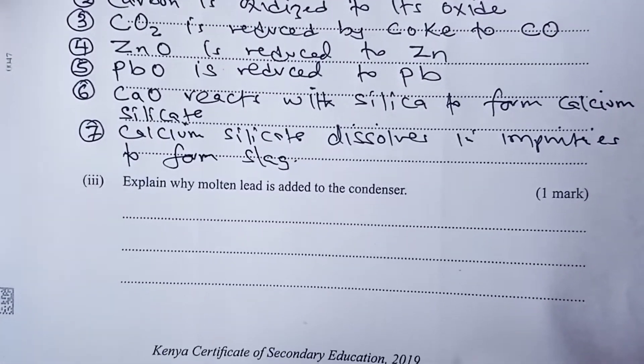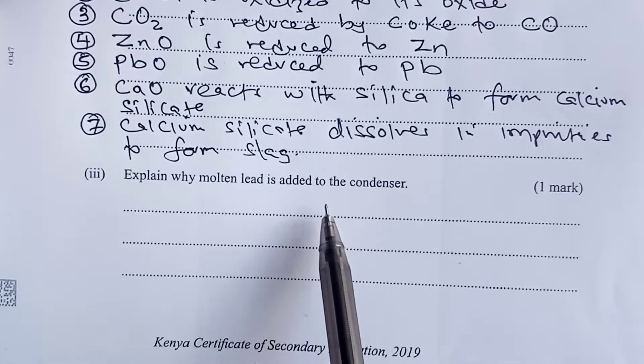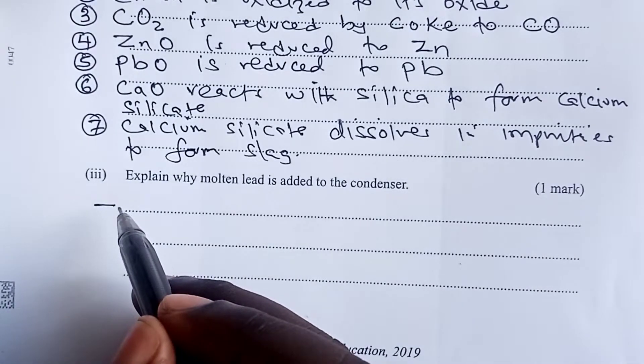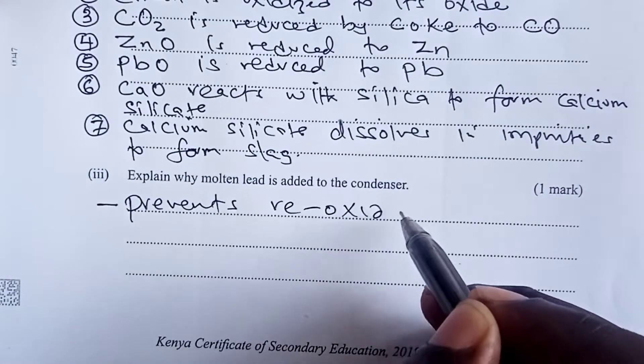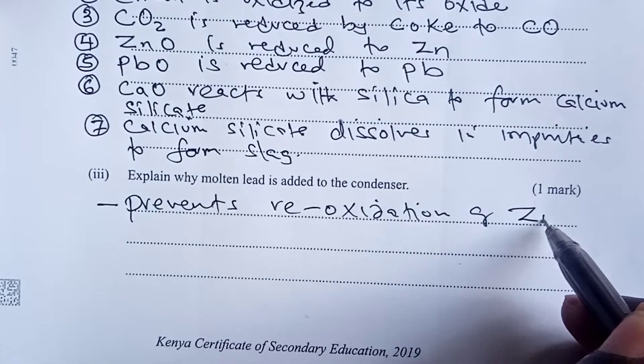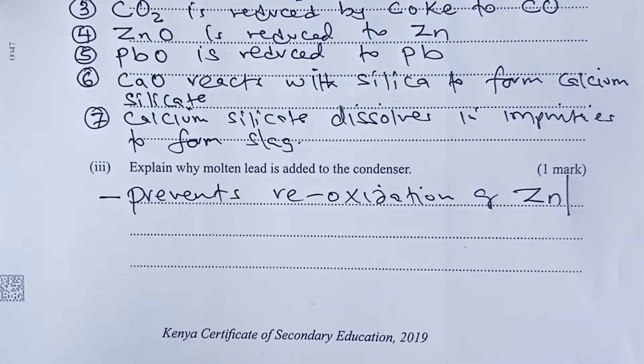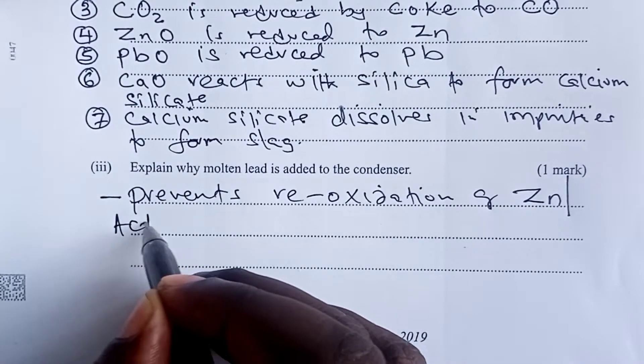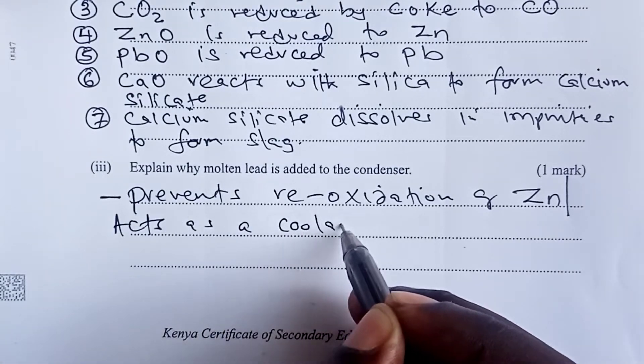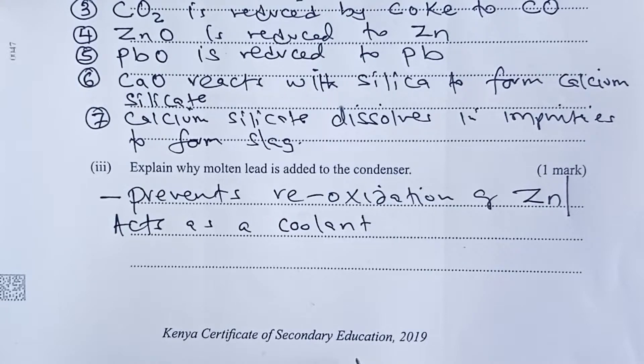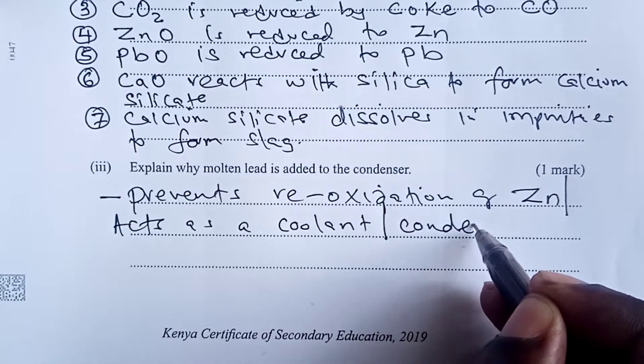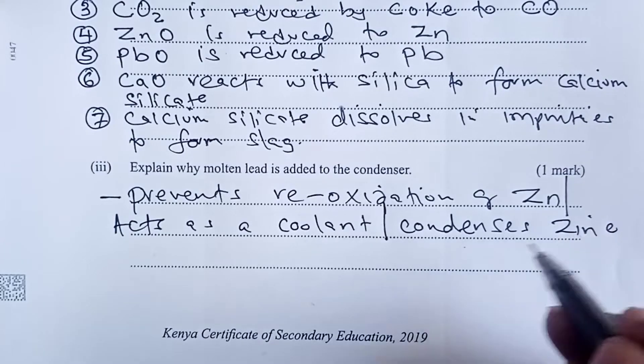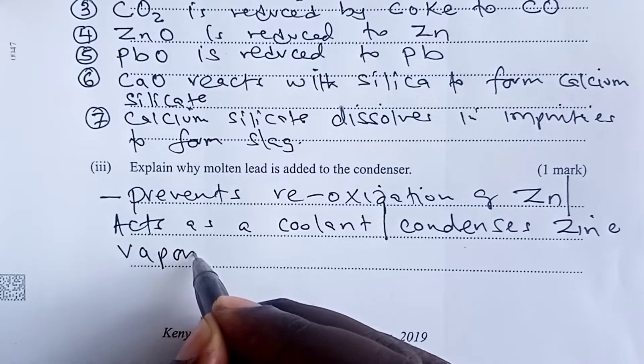The next question is asking us to explain why molten lead is added to the condenser. Molten lead has the function of preventing reoxidation of zinc. There is an option of also telling us that molten lead acts as a coolant. Remember, zinc gets out of the blast furnace in vapor form and then it leaves the condenser in liquid form. So molten lead would act as something that condenses zinc vapor to zinc liquid.